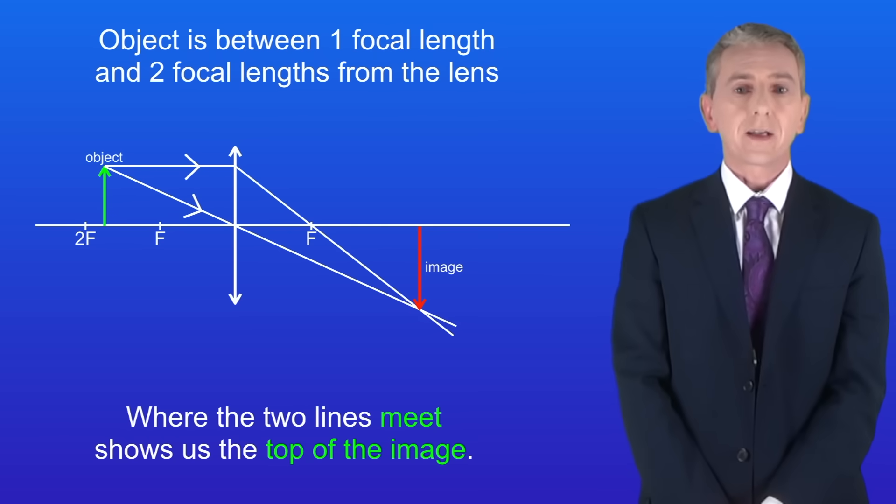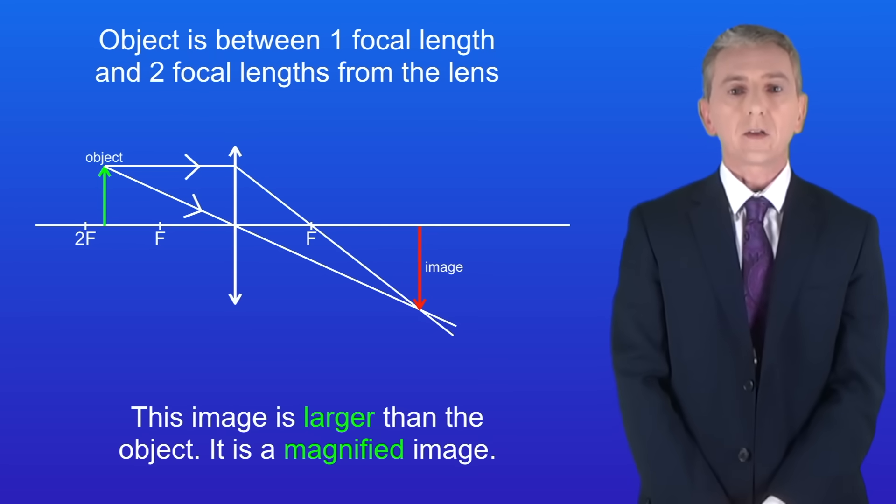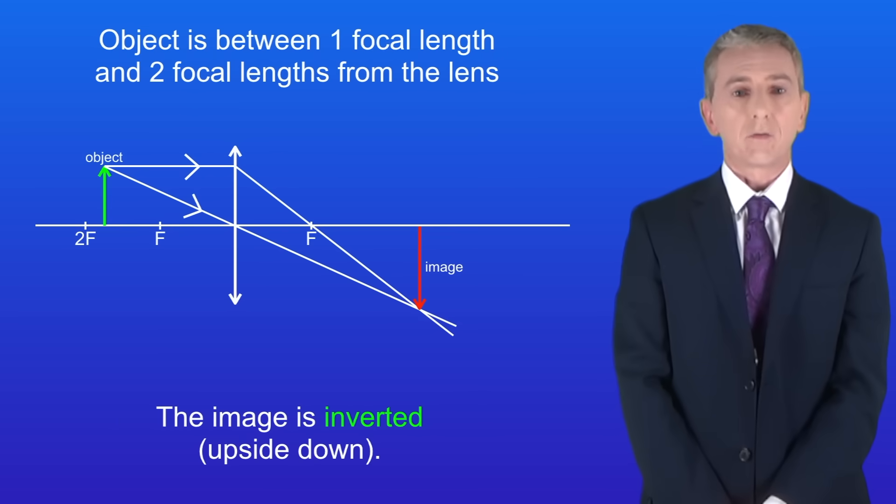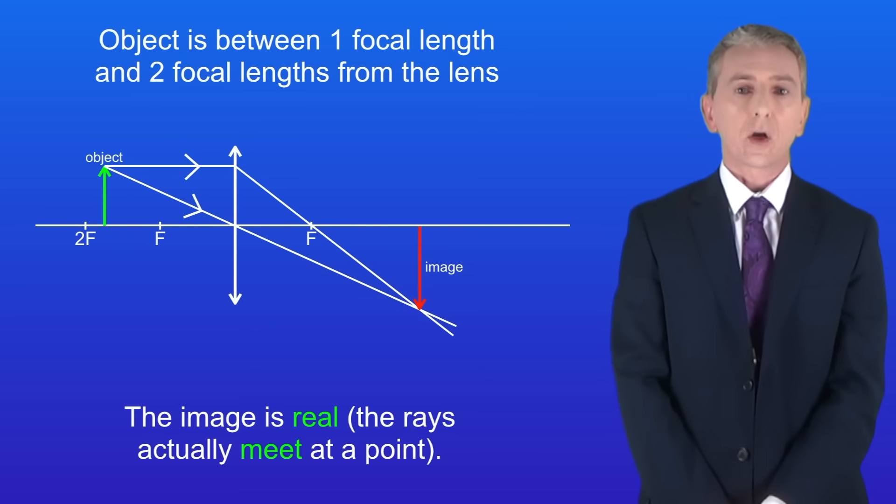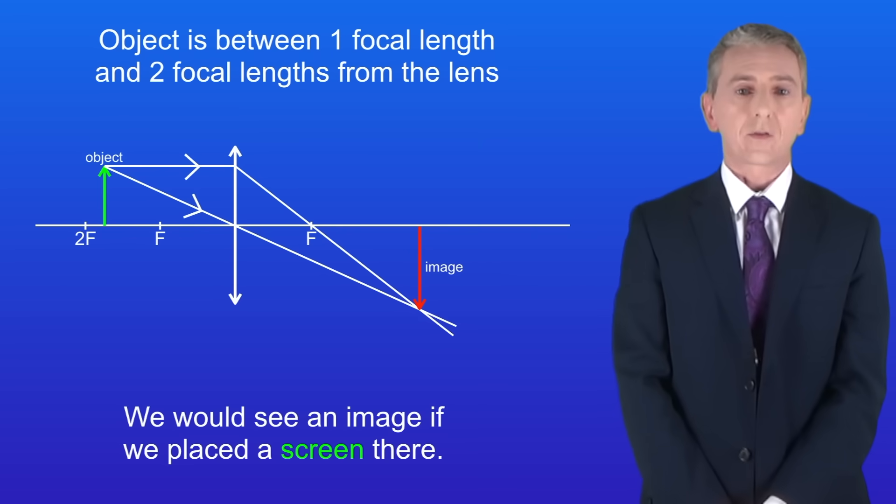And where the two lines meet show us the top of the image. Now I'd like you to look at this ray diagram and try to describe the three properties of this image just like we did before. Okay firstly this image is larger than the object. In other words it's a magnified image. Secondly the image is inverted and remember that inverted means upside down. And finally the image is real. Again we can tell that because the rays actually meet at a point and we'd see an image if we placed a screen there.